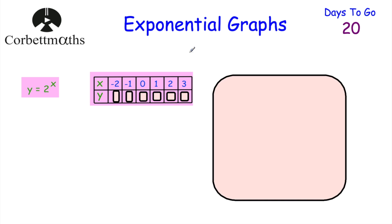Now let's look at exponential graphs - you may have heard of exponential growth. Consider the chessboard question: would you choose £1,000 for every square, or 1p doubling each square - 1p, 2p, 4p, 8p? Many people choose £1,000, but actually the exponential option is much better because it grows so fast. We're going to look at y equals 2 to the power of x - work out the values for x from negative 2 to 3.